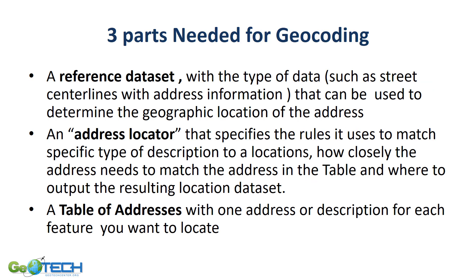There are three parts to geocoding that you need. First, a reference data set, then an address locator, and a table of addresses. The reference data set helps us actually geocode the descriptors. The address locator acts as the tool to make sure all those parts are where they need to be to process the geocoding. And finally, the table of addresses — those are our descriptors.